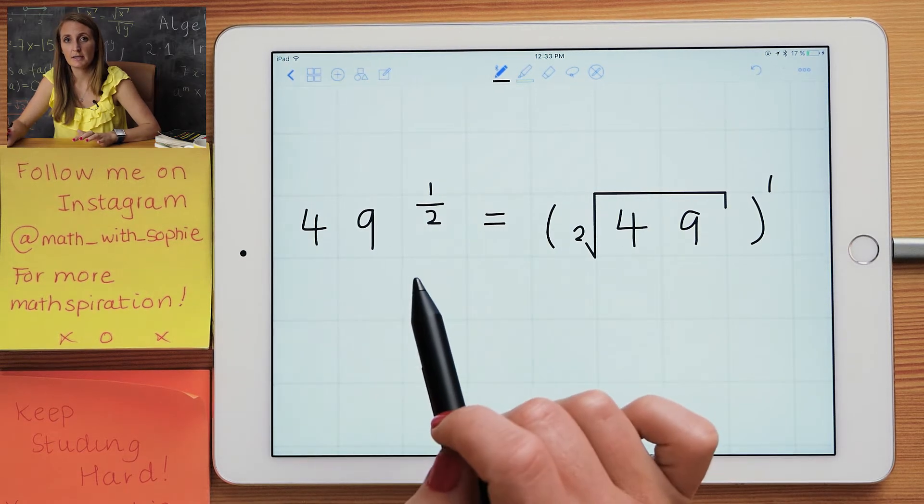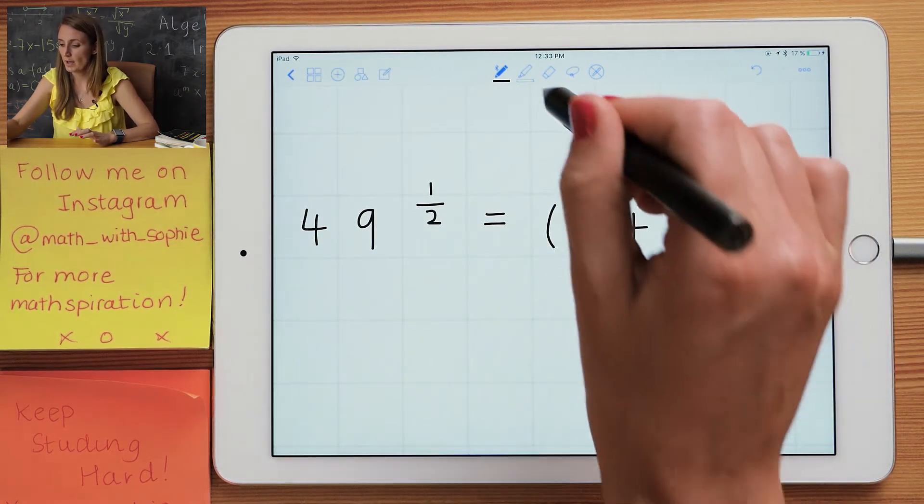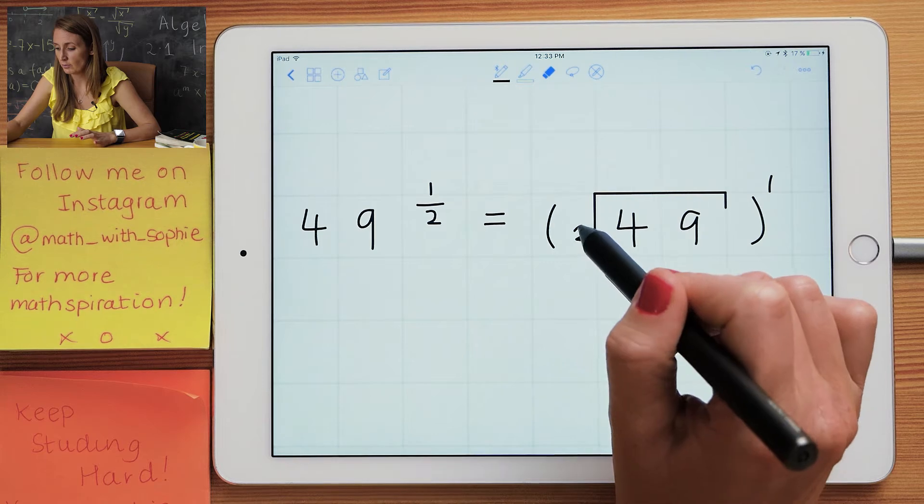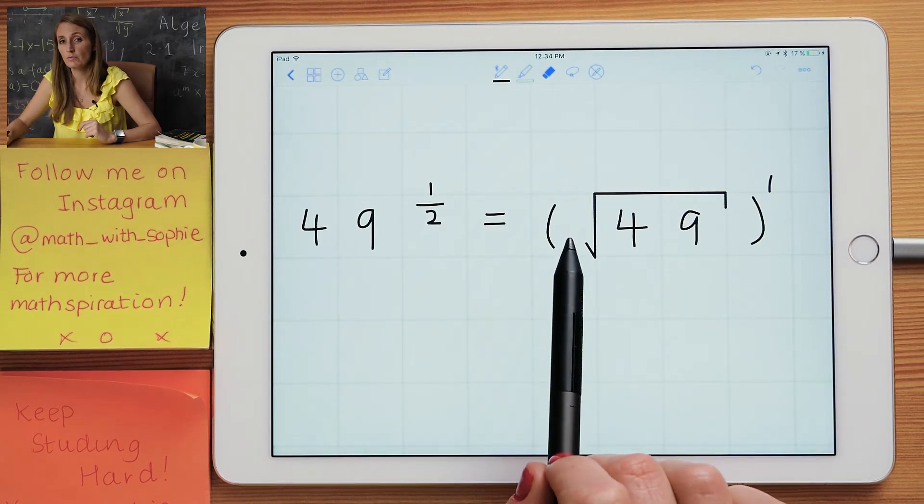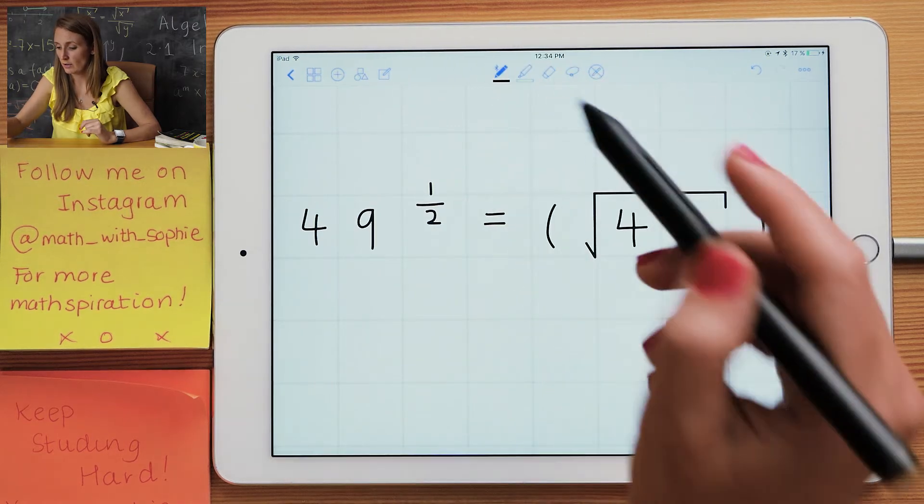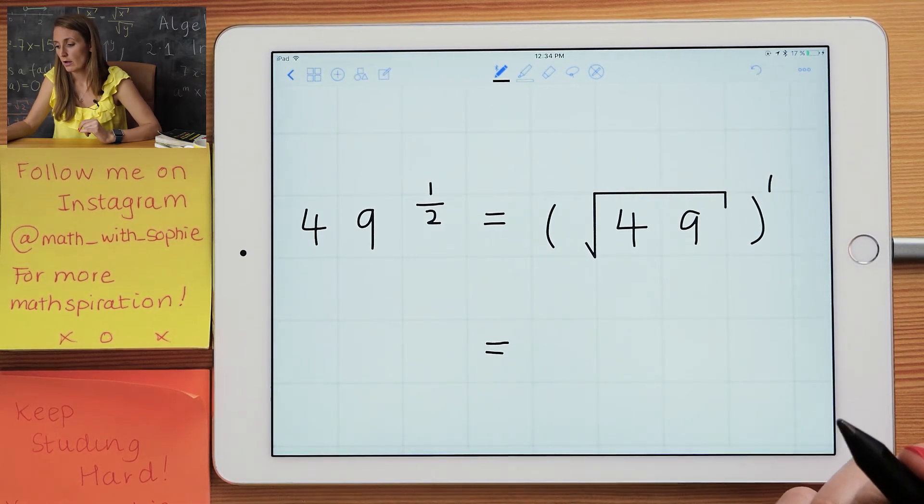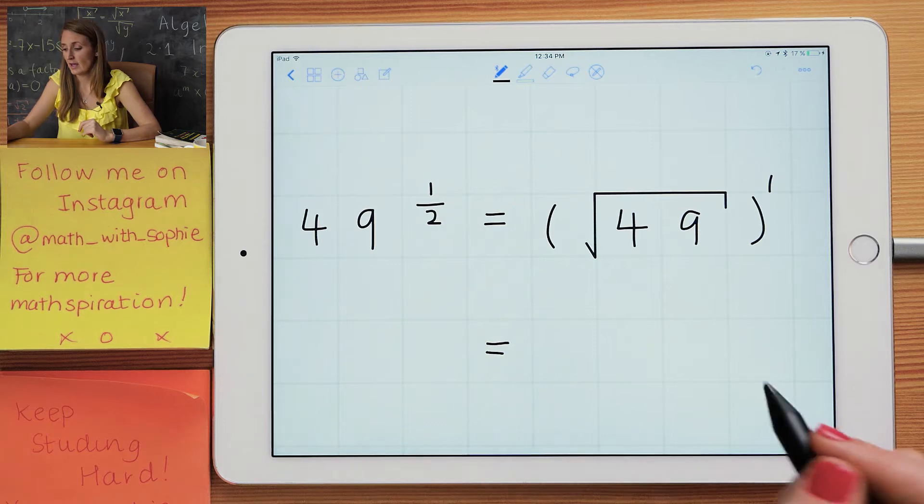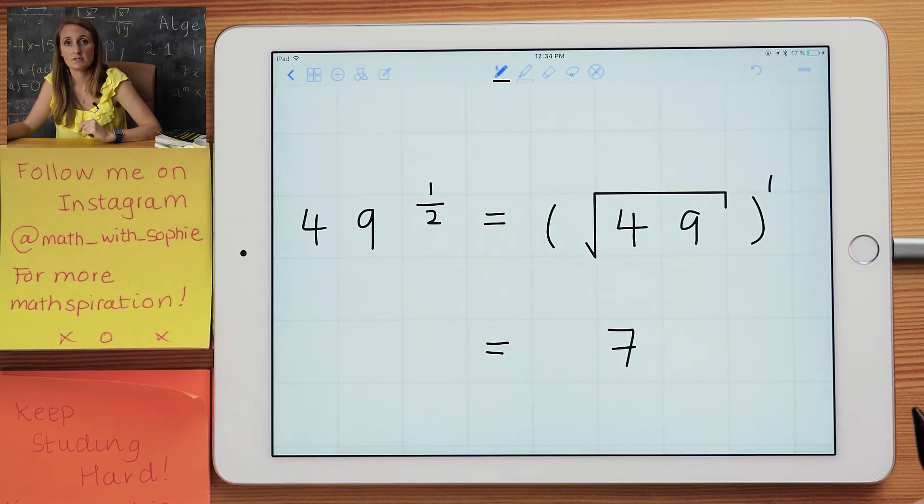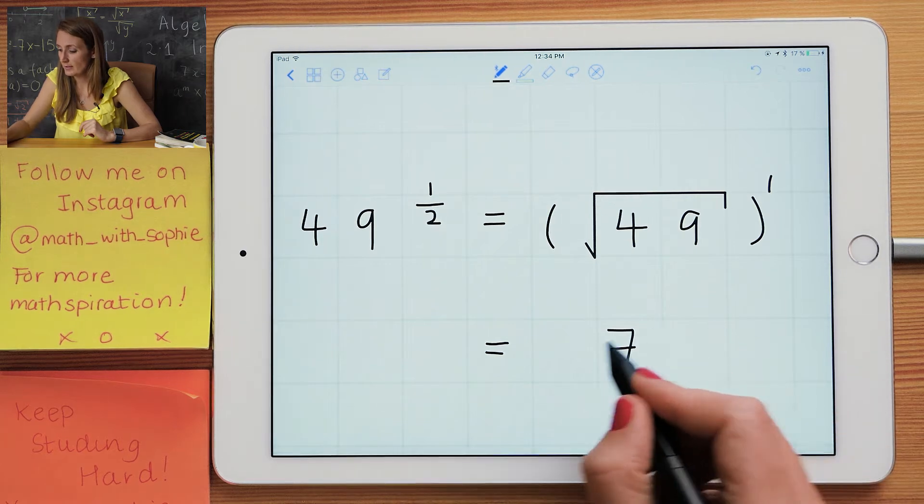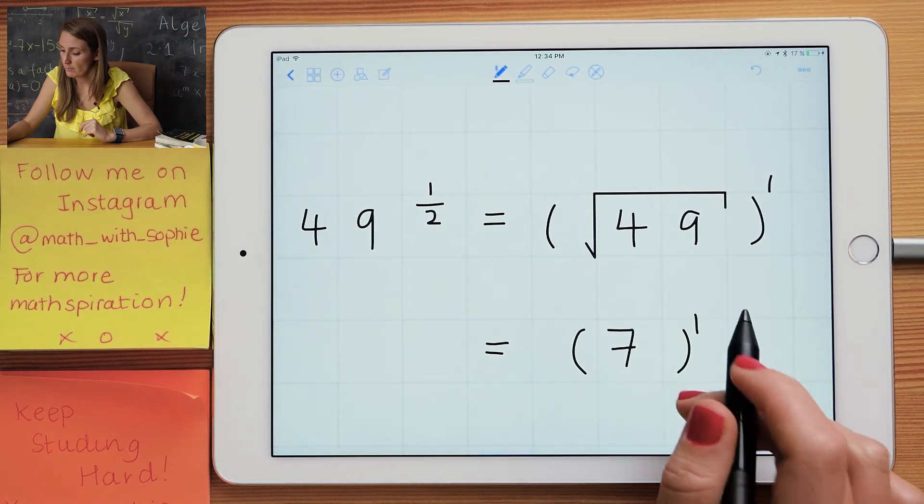Generally speaking, if you have a square root, you don't really write it anymore. You just see that written with nothing there, but if you were to write a number there, it would actually be a 2. Now the square root of 49 is 7, because 7 squared is 49, and now we have to do 7 power 1, which is just 7.